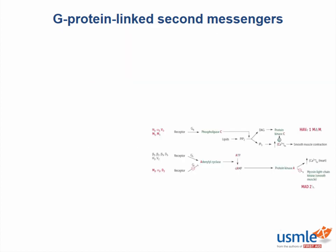As we spoke about in our acetylcholine receptors lecture, many drugs work by mimicking or antagonizing different receptors in our body, either to enhance or inhibit cellular activity. Some receptors are coupled to GTP binding proteins that signal enzymes to activate second messengers within a cell.